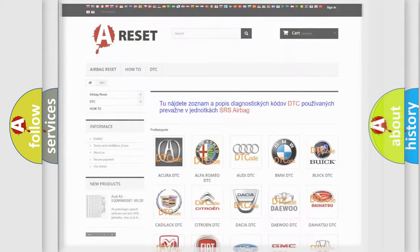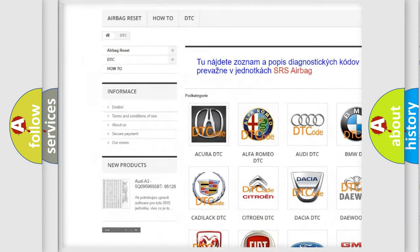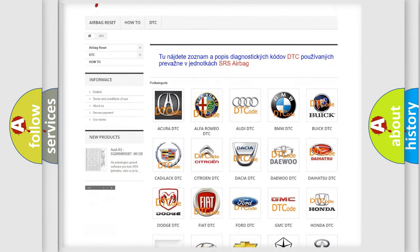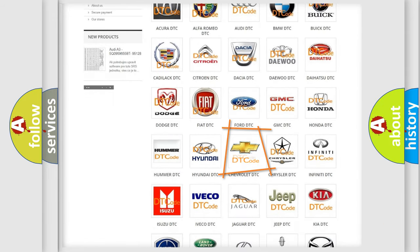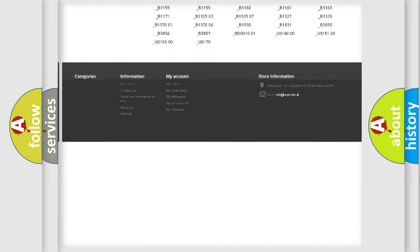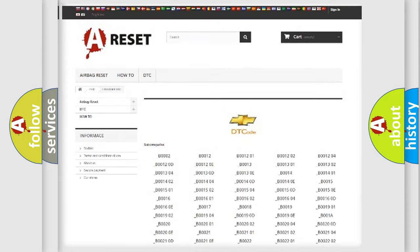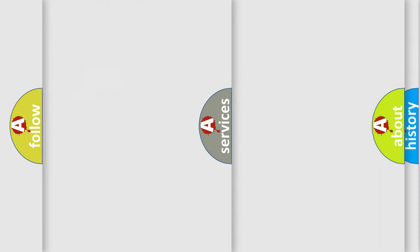Our website airbagreset.sk produces useful videos for you. You do not have to go through the OBD2 protocol anymore to know how to troubleshoot any car breakdown. You will find all the diagnostic codes that can be diagnosed in Chevrolet vehicles, and many other useful things.